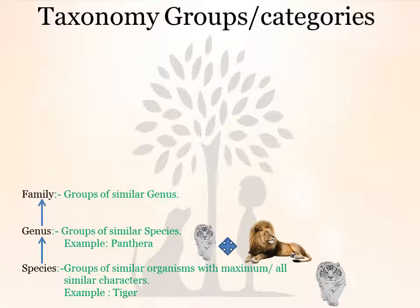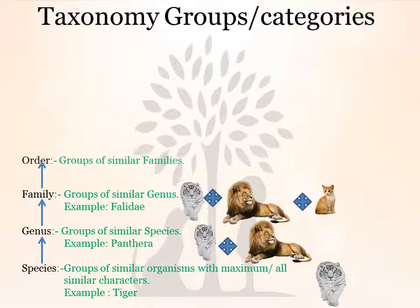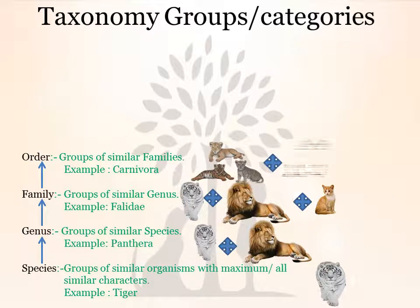Family is a group of similar genera. Example: Felidae. Tiger and lion, together with cats, are studied under the family Felidae. Order means different families with similar characters studied together. Example: Carnivora. Tiger, lion, leopard, combined with cat and dog — they are all carnivores and are studied under Carnivora. Carnivores are those organisms which eat flesh or meat only.